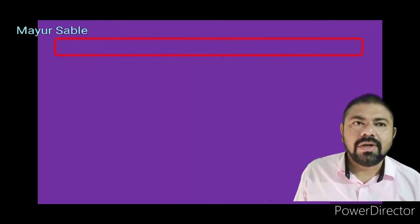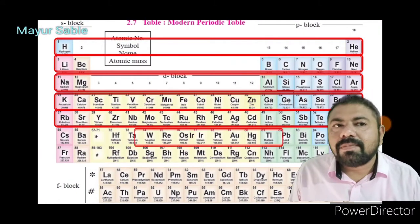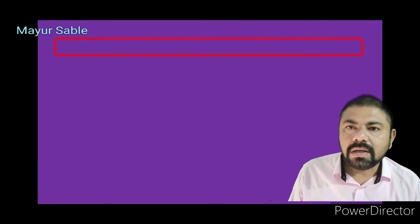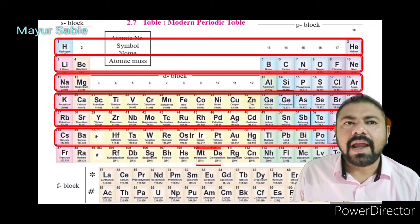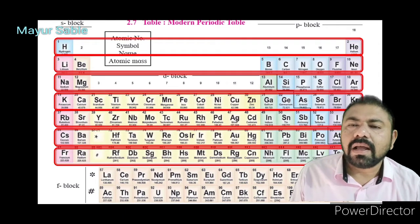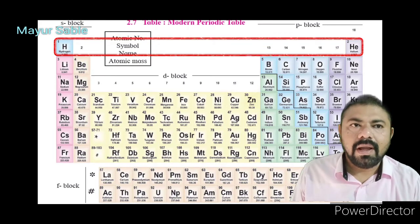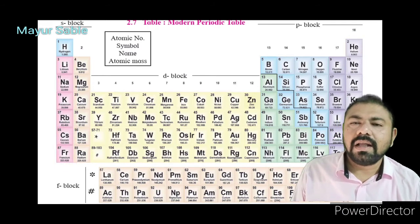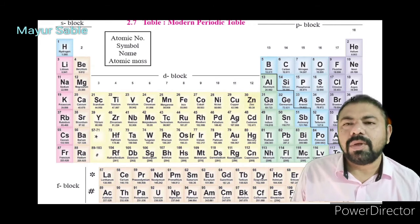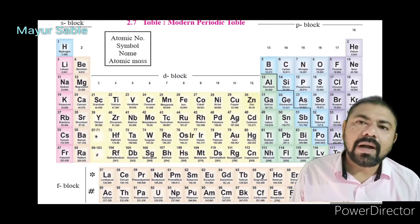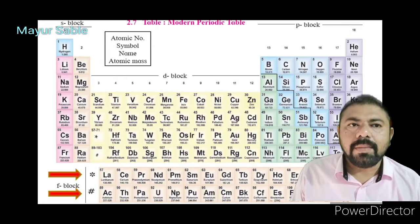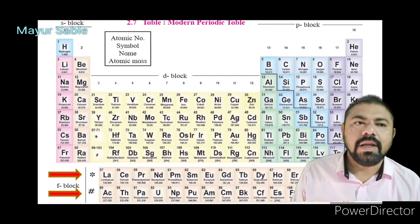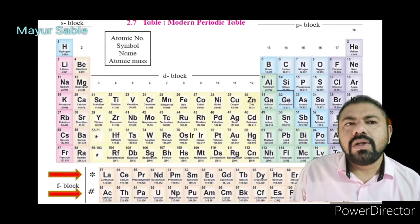The modern periodic table contains seven horizontal rows called periods, numbered 1 to 7. Similarly, there are 18 vertical columns called groups, numbered 1 to 18. The arrangement of periods and groups results in the formation of boxes, with atomic numbers serially indicated in the upper part of each box. Each box corresponds to the place for one element only.